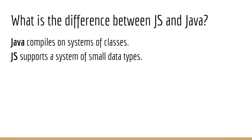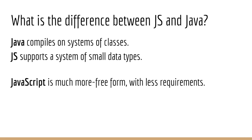JavaScript's data types represent numerics, strings, and true and false values. The main point is that JavaScript is a much more free-form language when compared to Java.